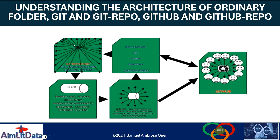Once we have our Git repository, we can link it to GitHub to create a GitHub repository, and then push what we have locally from our machine to the GitHub repository. Alternatively, we can go to GitHub on the internet, create a GitHub repository there, clone it to our local machine, work on the program we might be sharing with others, and then push it back — commit and send it back to GitHub to keep a copy there.